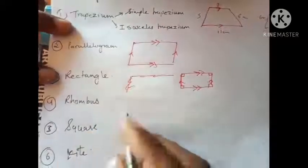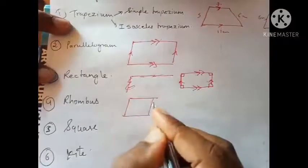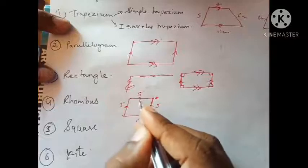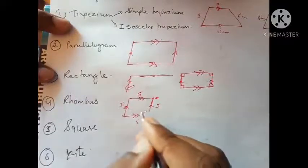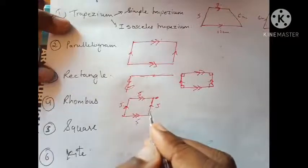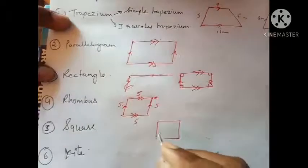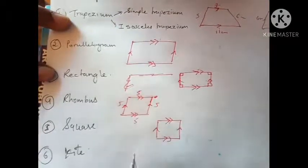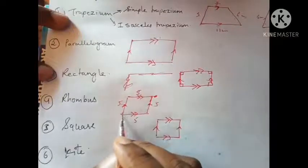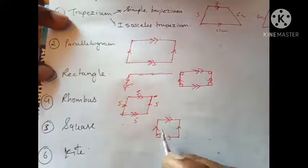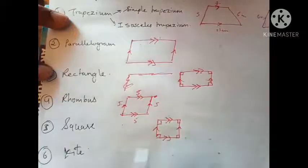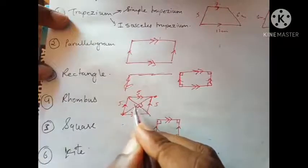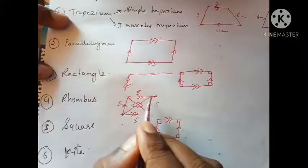In a rhombus, all four sides are equal and opposite sides are parallel to each other. So if one side is 5 cm, all sides are 5 cm, and opposite sides are parallel. In a square, all sides are equal and all opposite sides are parallel — just like a rhombus. The difference is that in a square all angles are 90°, whereas in a rhombus the angles at the corners are not 90°; the 90° is formed where the two diagonals intersect at the center.